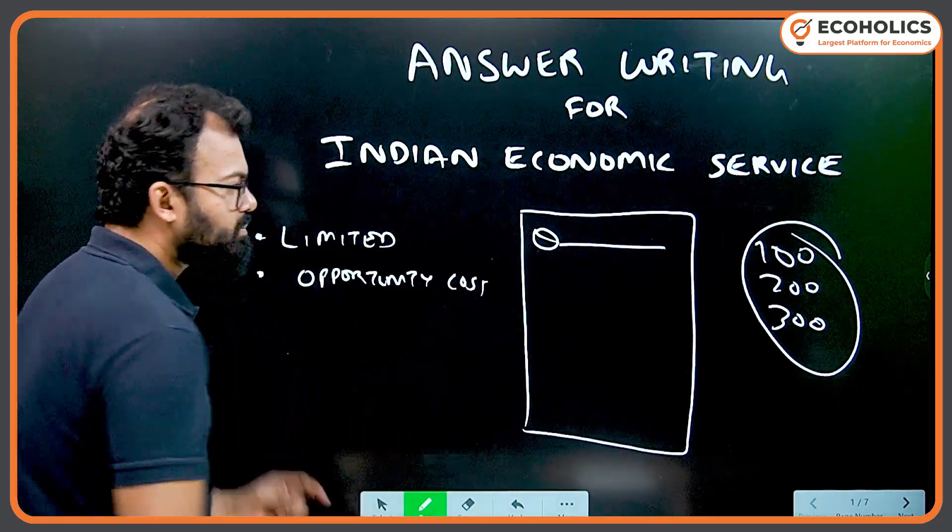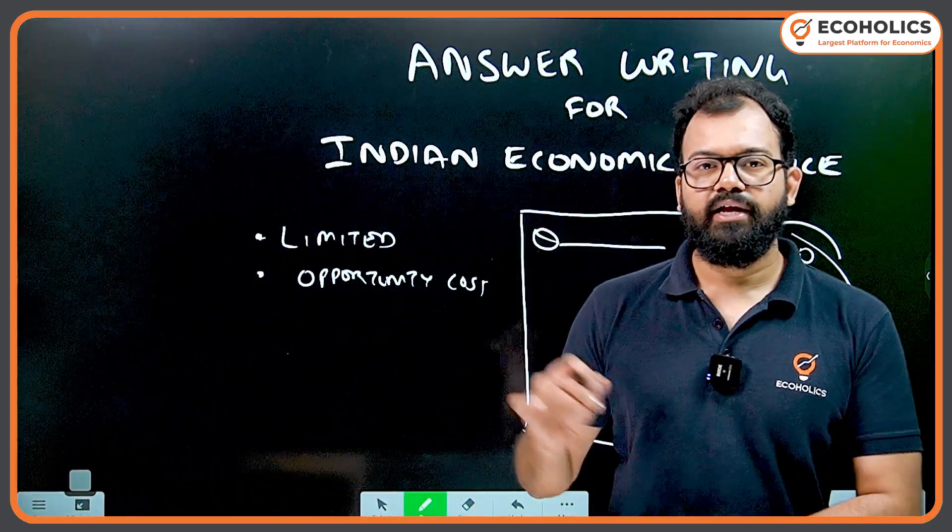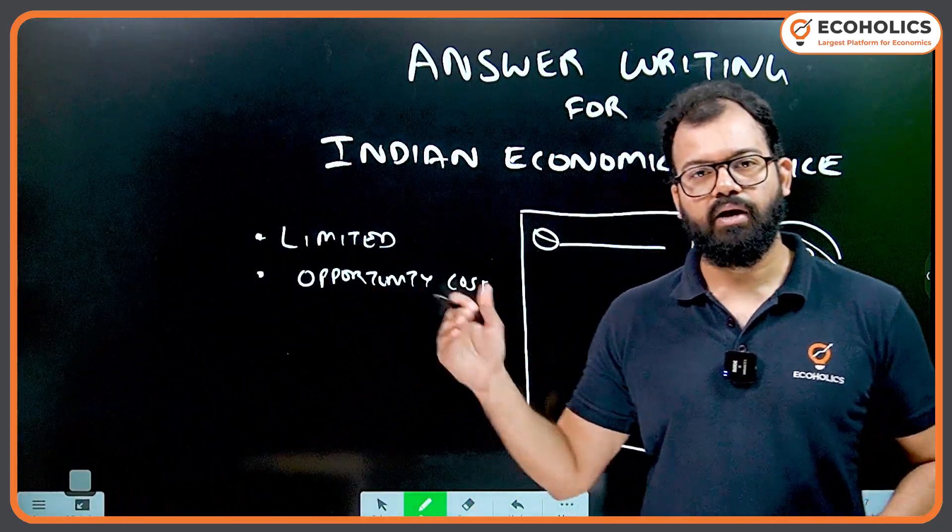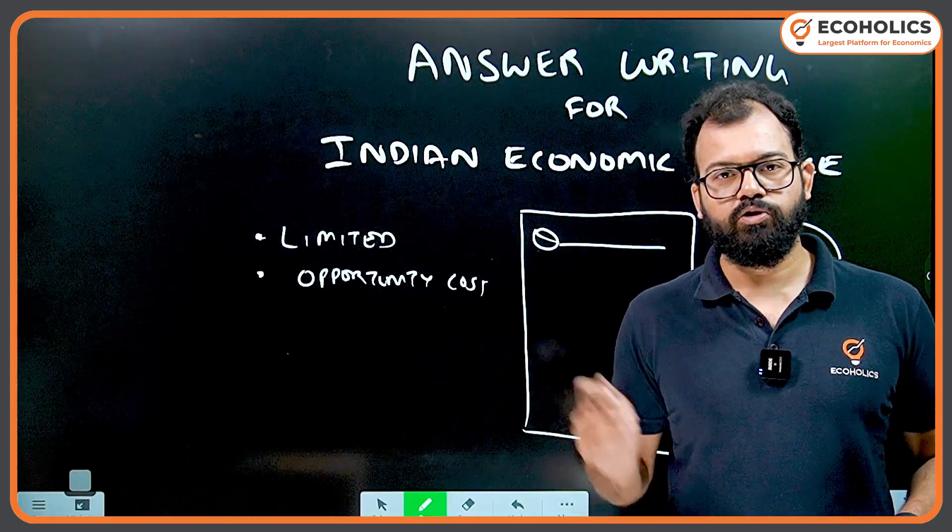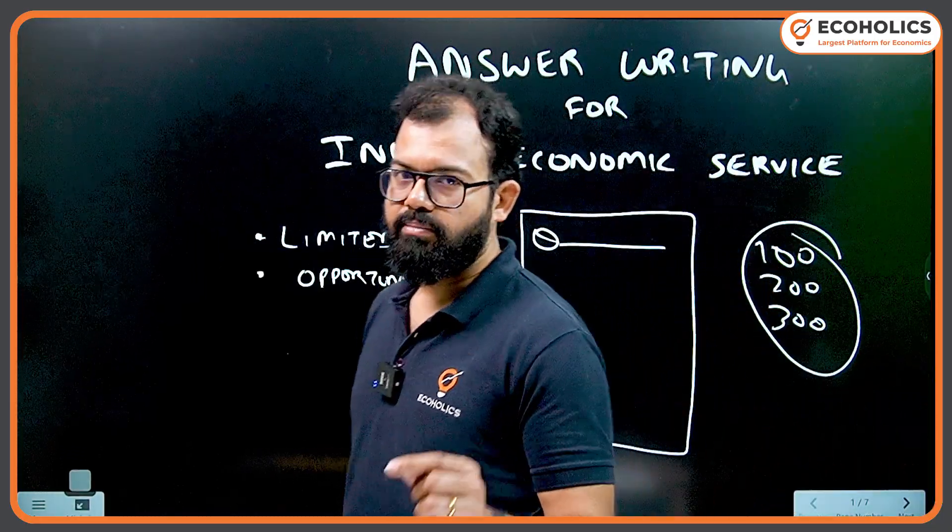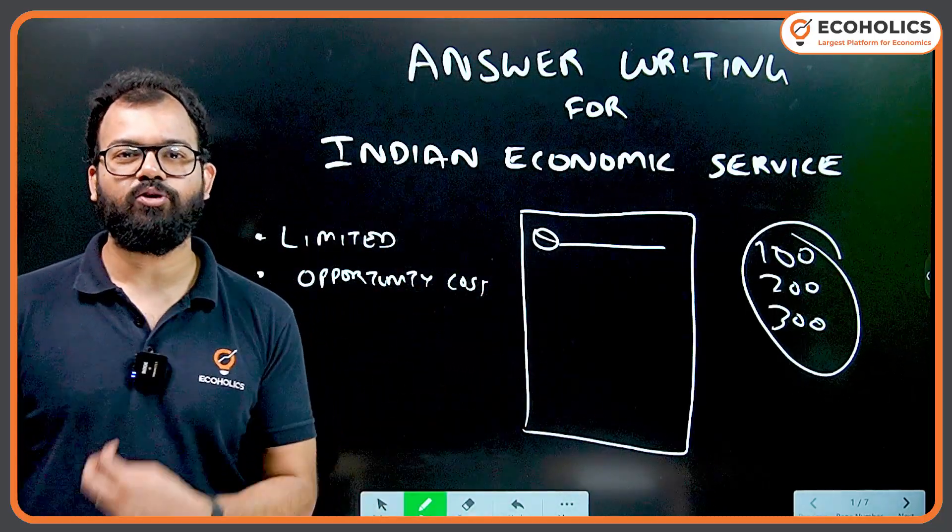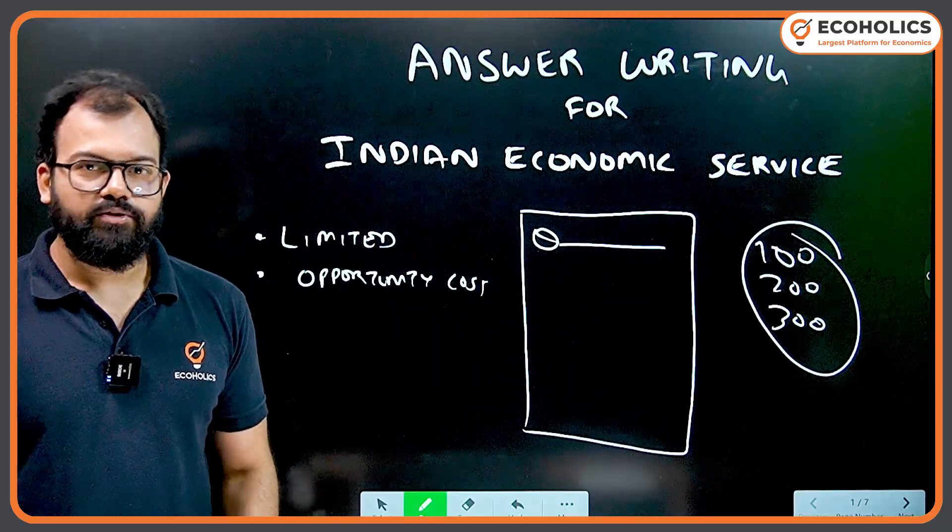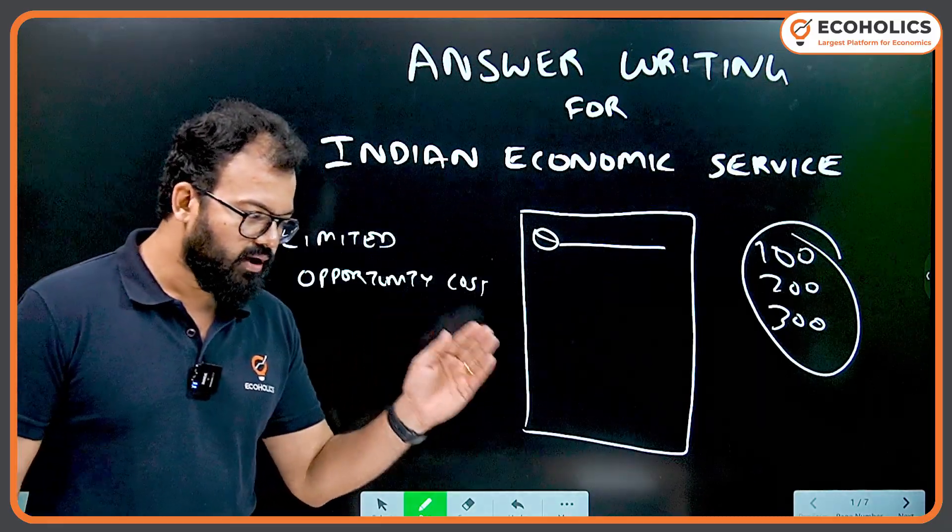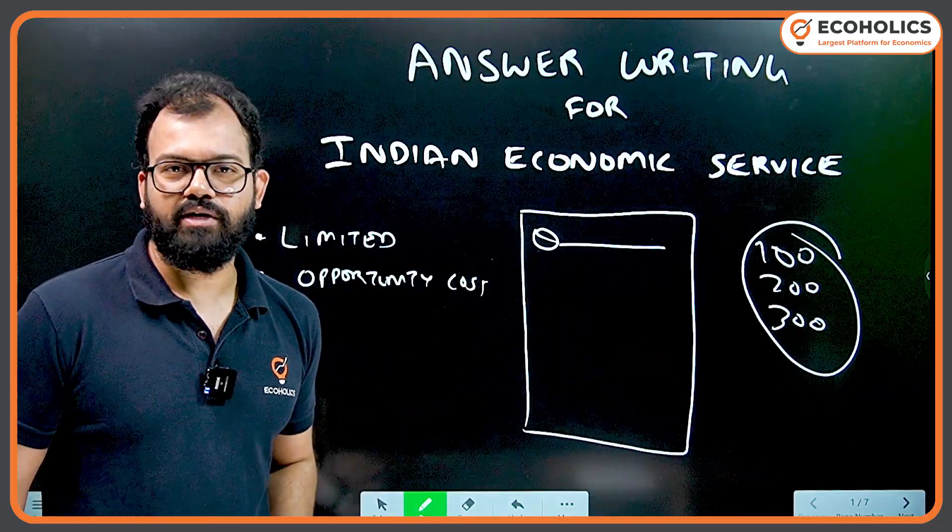First is limited resources, second is opportunity cost. Generally people make the mistake of reading the same topic from one book, another book, third book, fourth book. This happens in Indian economy and microeconomics where you find multiple books with similar content.